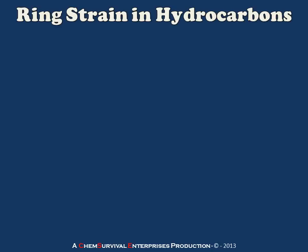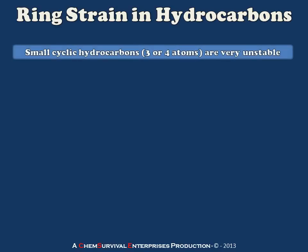Hey everybody, Professor Davis here again for Chem Survival Enterprises. This time I'm going to talk to you a little bit about ring strain in hydrocarbons. I'm going to start by reminding you that small cyclic hydrocarbons — those of three or four atoms — are usually very unstable. They have a tendency to want to open up and become linear molecules instead of those tiny little cycles that they are. The question we're going to try to answer today is why that is.